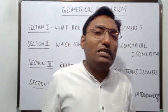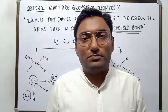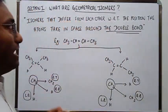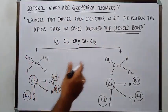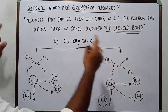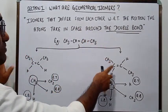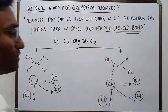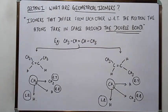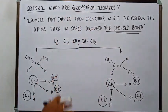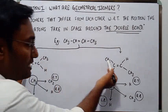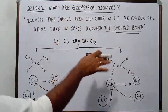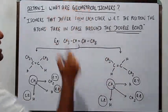Let us start with Section 1: what are geometrical isomers? In geometrical isomers, the isomers differ from each other in only one aspect — the position that atoms occupy in space around a double bond. The molecular formula is the same; what they differ in is the position they take up in space around the double bond.